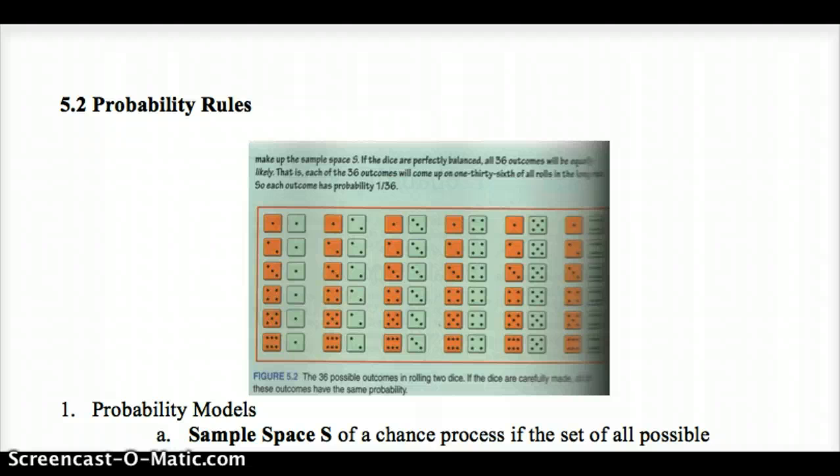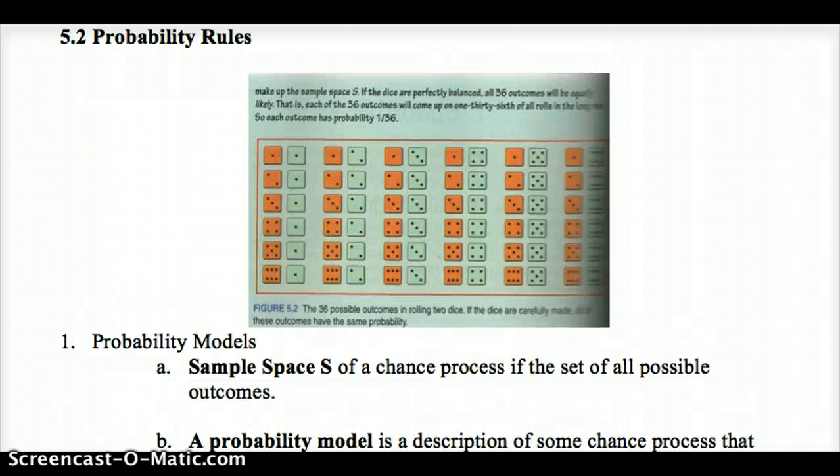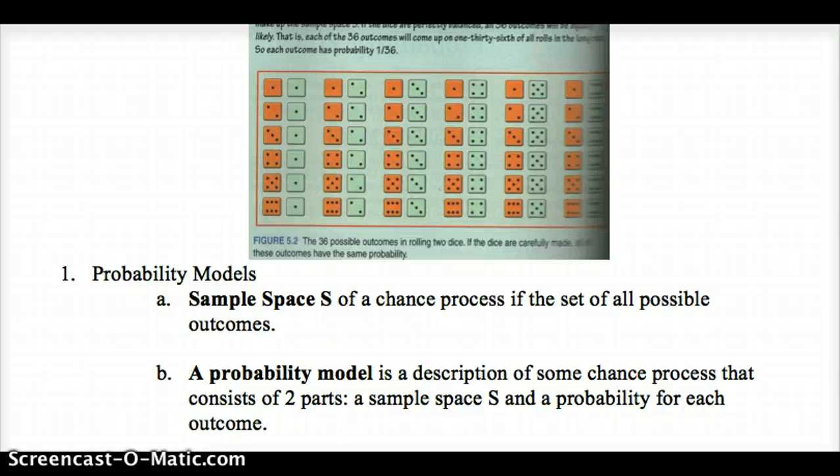Now, let's look at some rules for probability. Sample space is the set of all possible outcomes. For rolling two dice, we have six possible outcomes on each die, so six times six is 36. There's 36 different possible combinations. This picture up here represents the sample space of all possible outcomes when rolling two dice. A probability model is a description of a chance process that consists of a sample space and a probability for each. With two fair dice, we'd have a 1 in 36 chance of rolling any of these, since there's 36 possible outcomes and each die has an equal chance of being on 1, 2, 3, 4, 5, or 6.